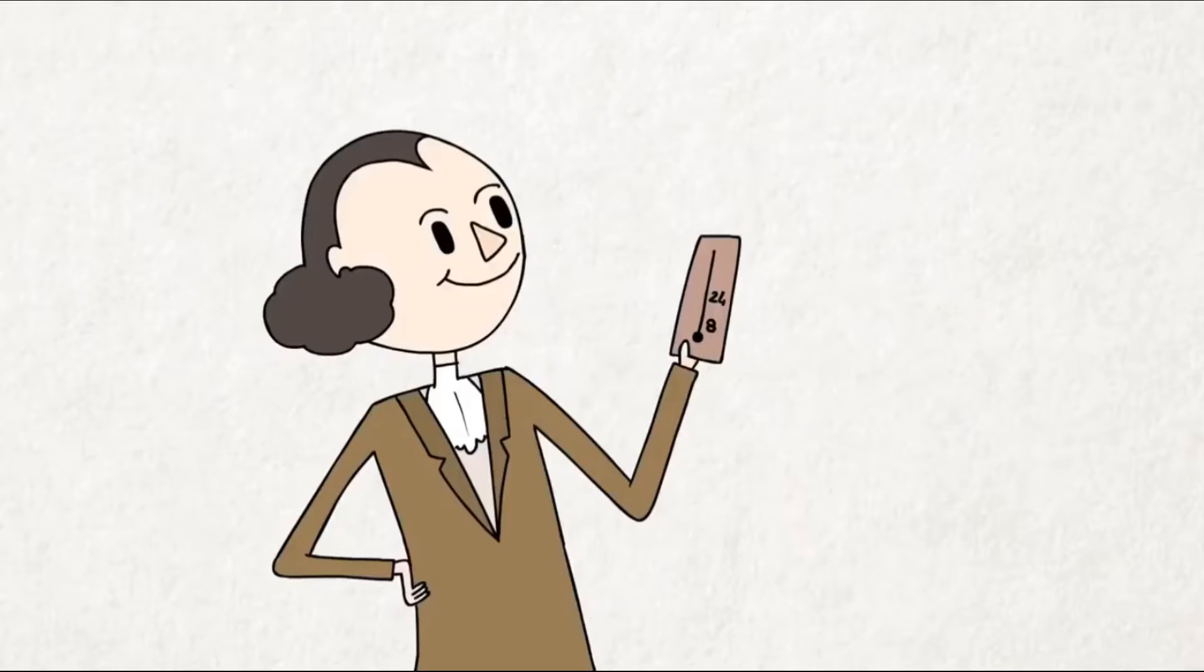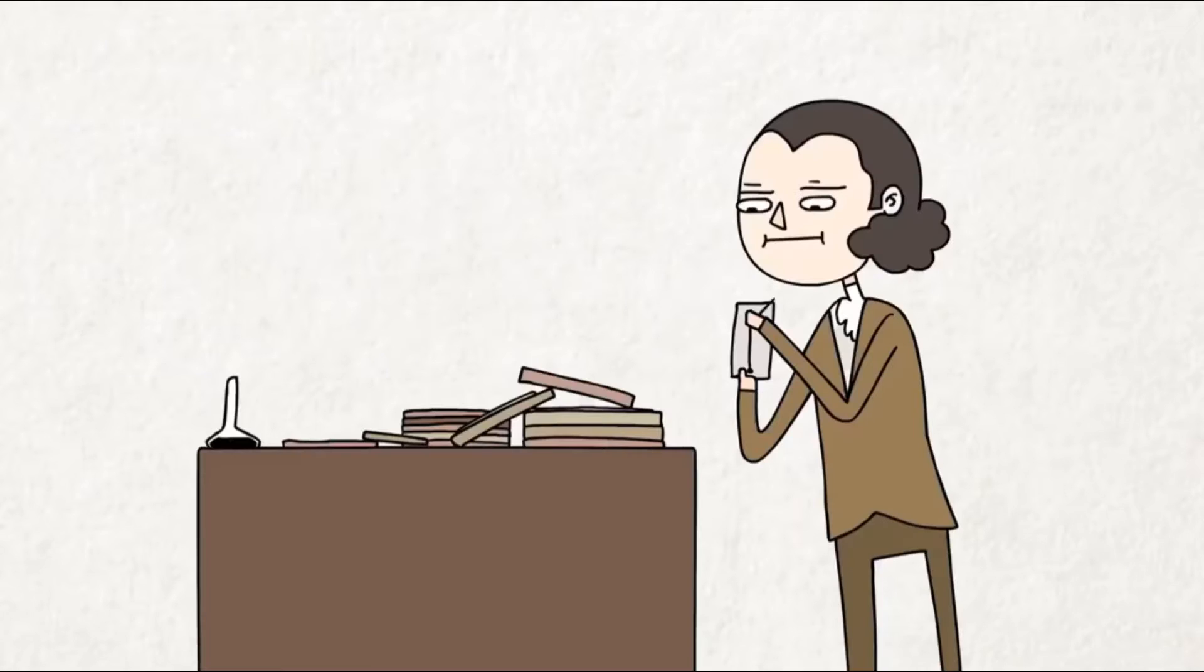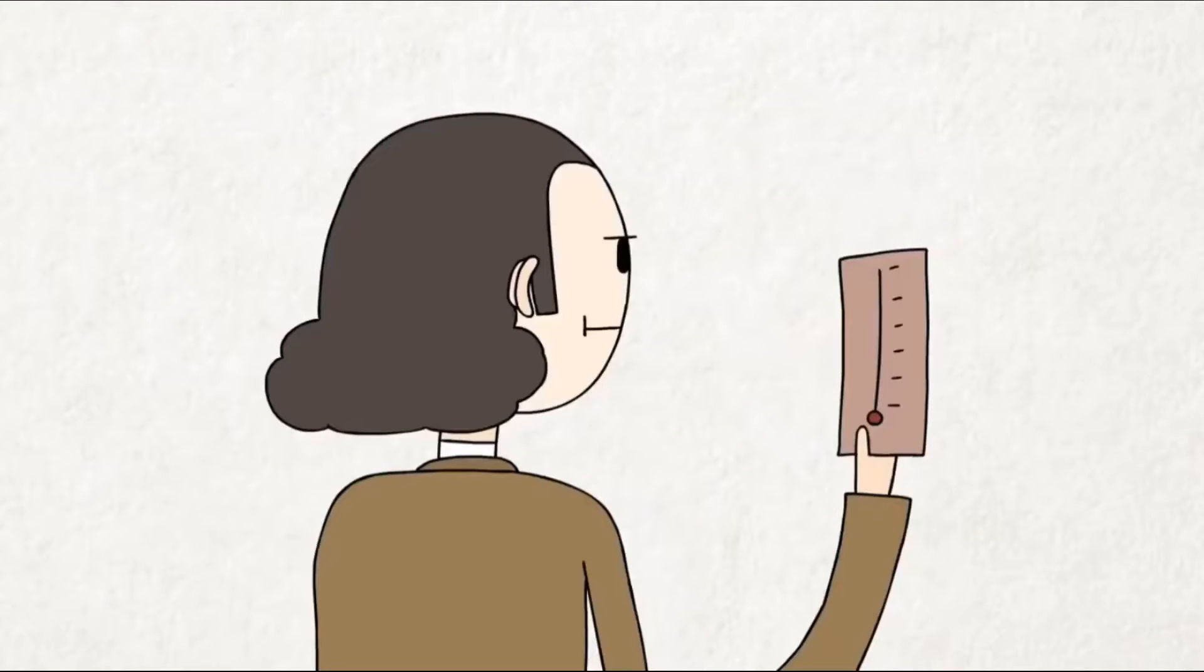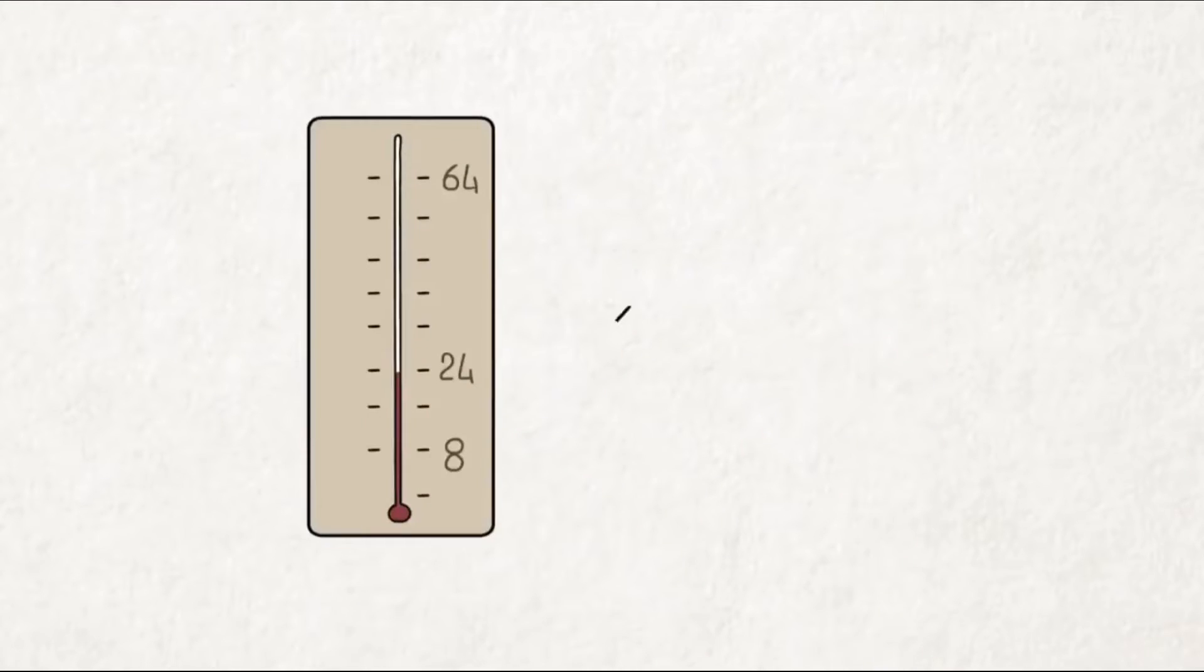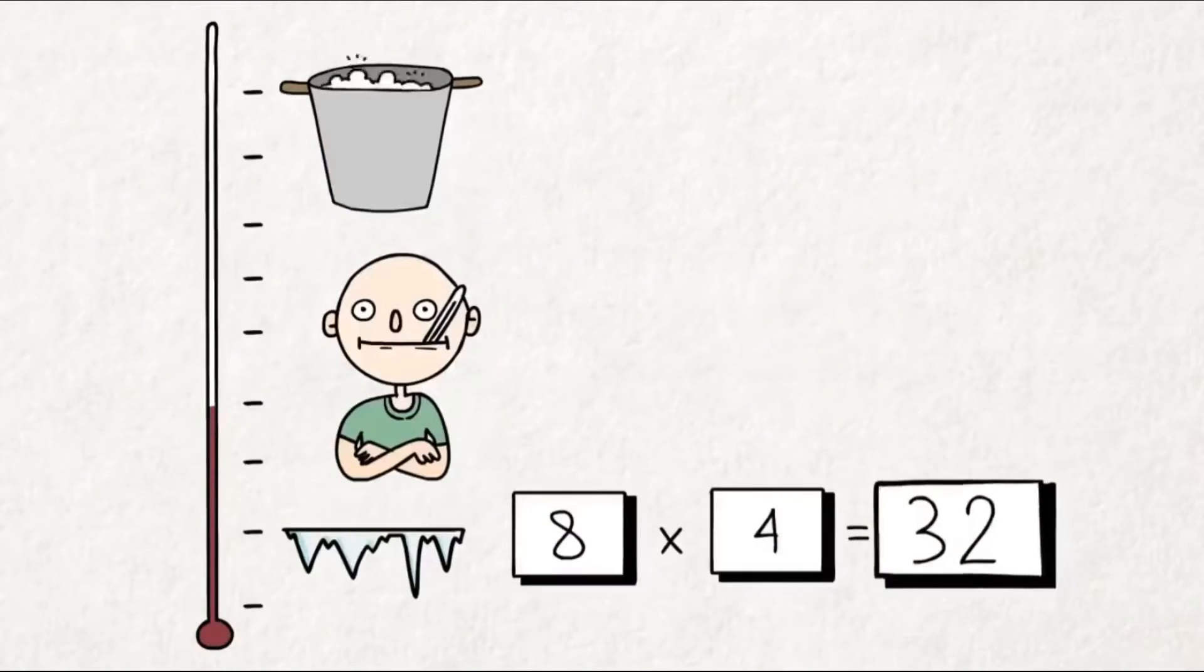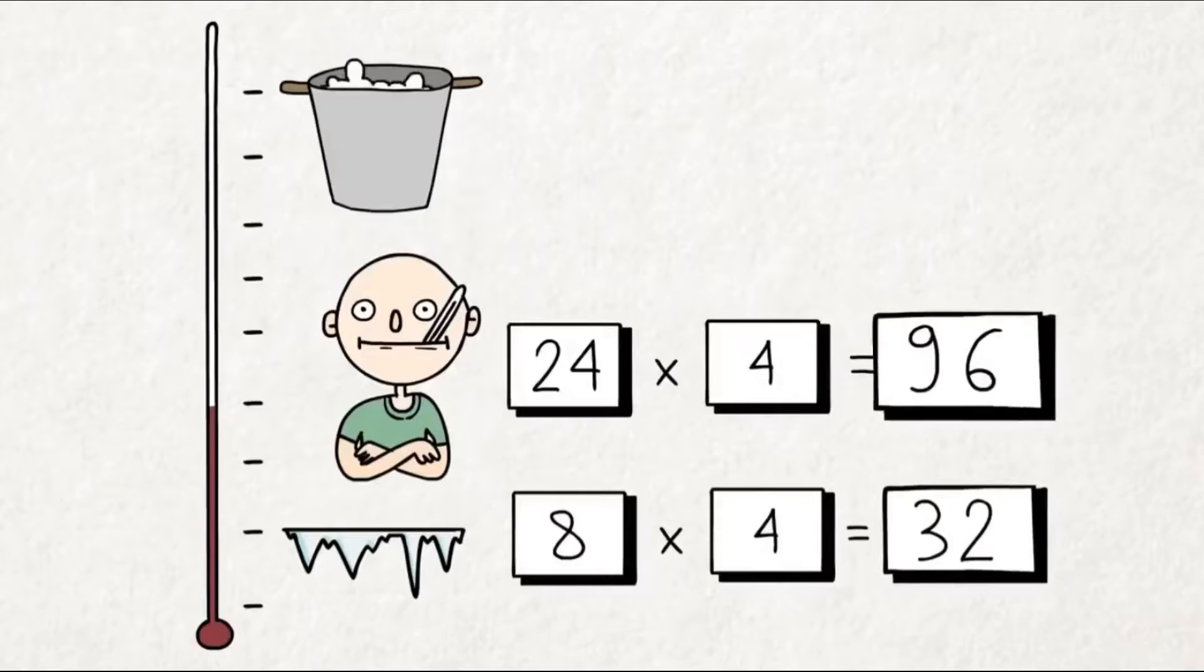And this is the original Fahrenheit scale. He produced thermometers for some time using this scale. But then, at some later point, Fahrenheit multiplied all numbers on his scale by 4, setting freezing point to the now familiar 32, and body temperature to 96.